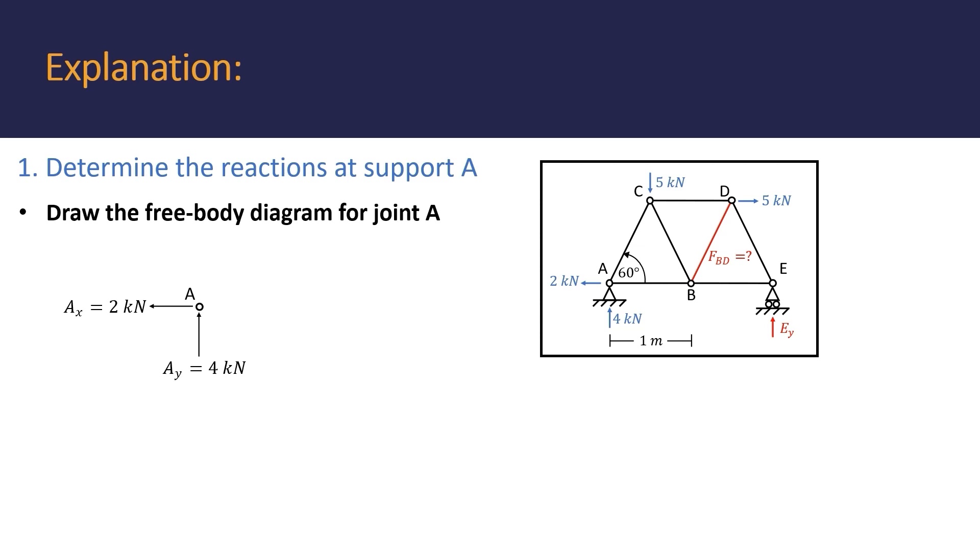We start off by drawing a free body diagram for this point, first including the 2 kN force in the x direction, and then including the 4 kN force in the y direction. Hereafter, we include the force exerted by member AC, and as you can see, this force acts on joint A at an angle of 60 degrees.